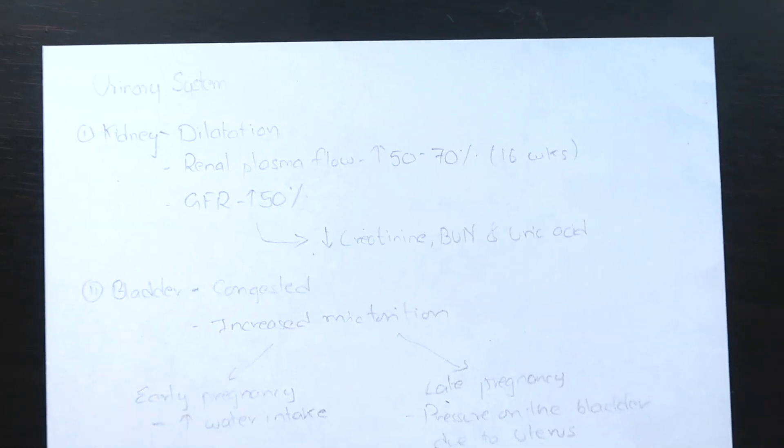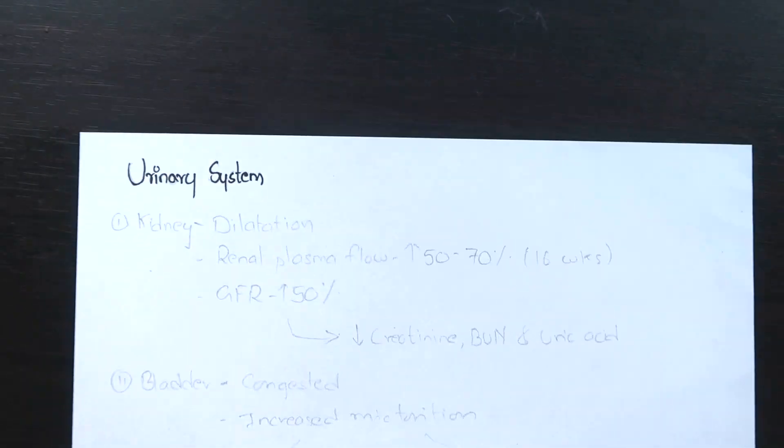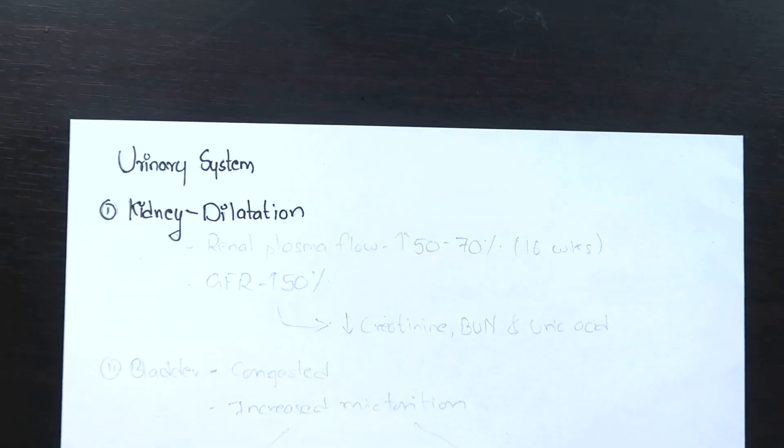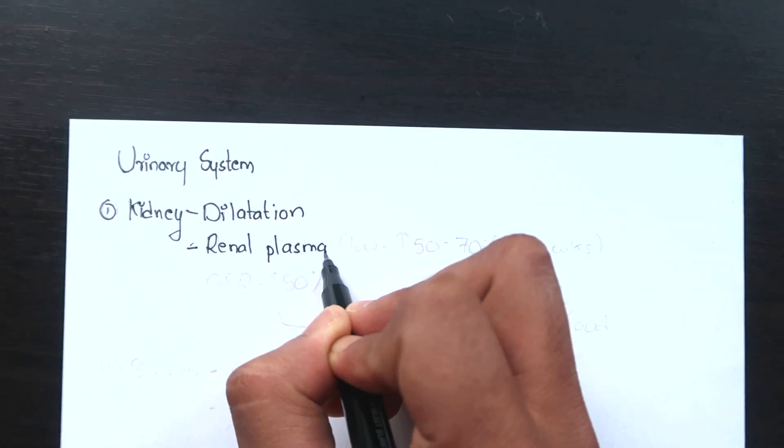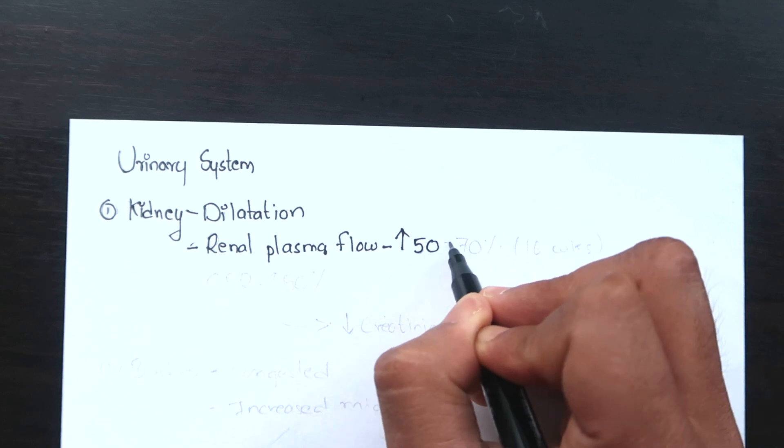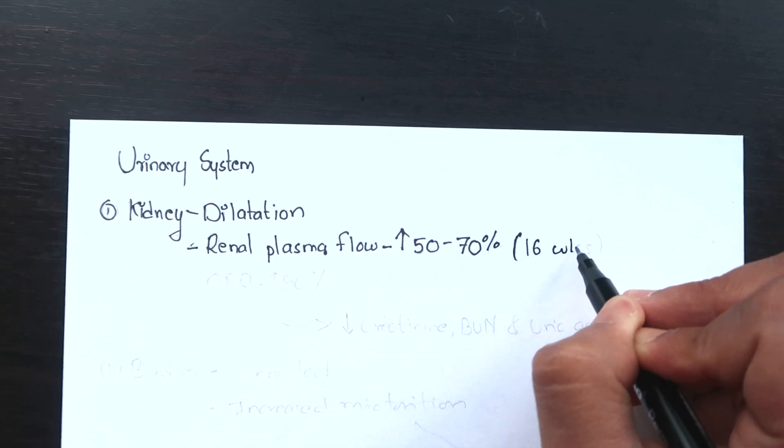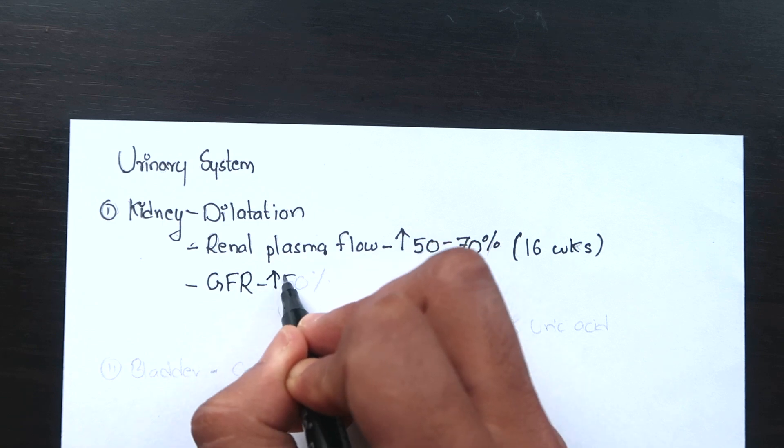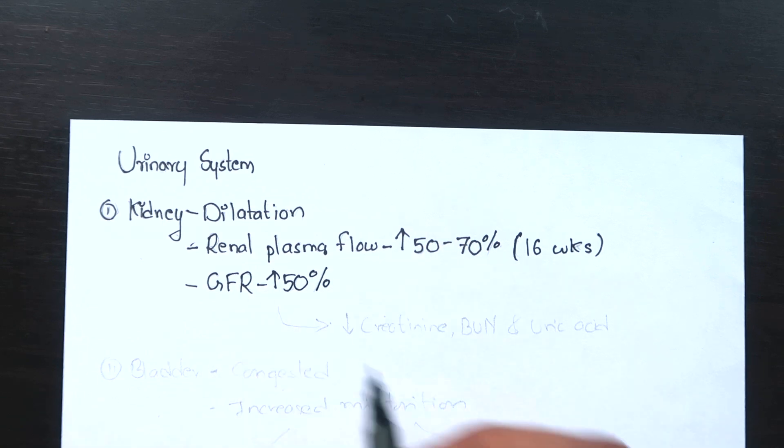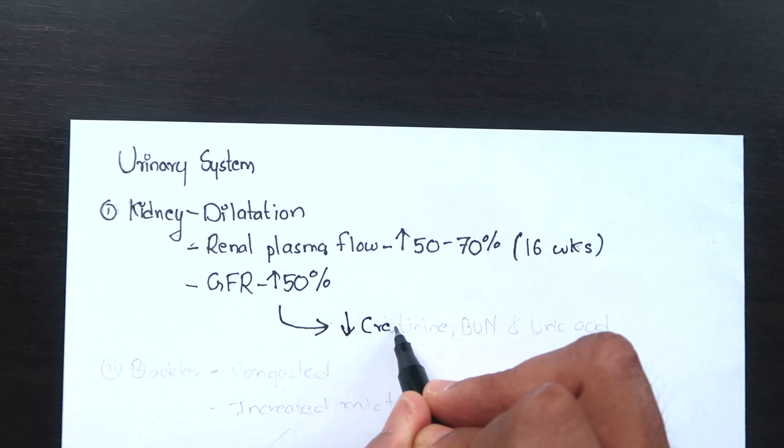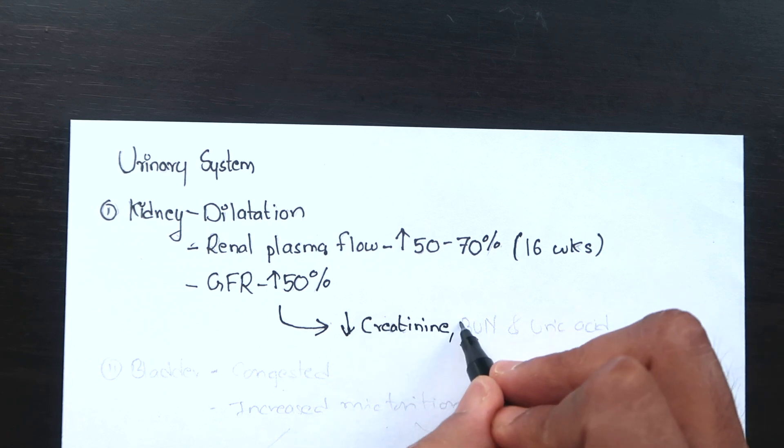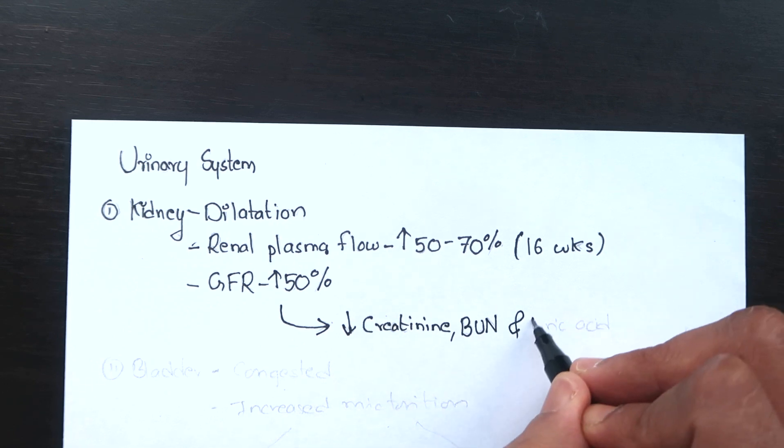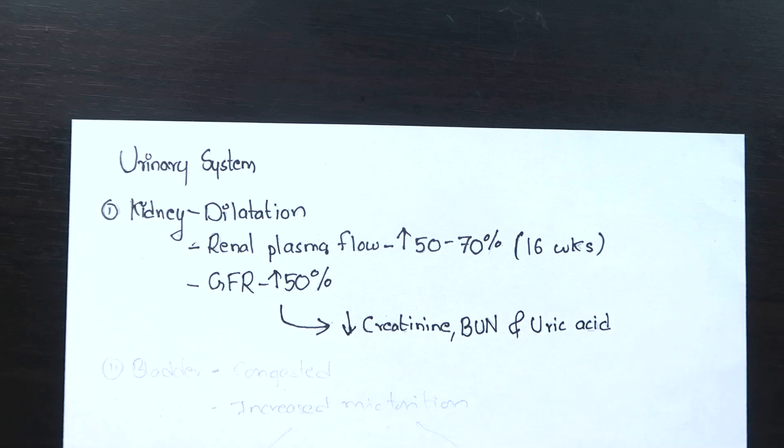In the kidney, there is dilation of the ureters, renal pelvis and the calyces. Renal plasma flow is increased by 50 to 75% maximum by the 16 weeks. Glomerular filtration rate is increased by 50% all throughout pregnancy. Increased GFR causes reduction in maternal plasma levels of creatinine, blood urea nitrogen and uric acid.